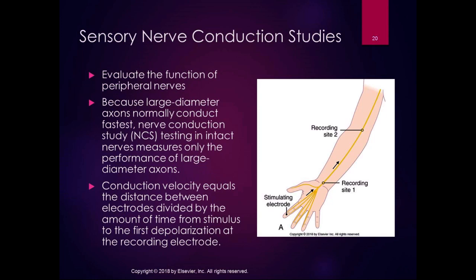For example, if you have sensory loss in the C6 dermatome or peripheral nerve distribution — as often seen with carpal tunnel syndrome — there could also be a problem at the elbow, shoulder, or nerve root. Sensory nerve conduction studies evaluate the peripheral portion to find where the slowdown is, distinguishing between carpal tunnel syndrome versus a problem at the elbow, shoulder, or brachial plexus.